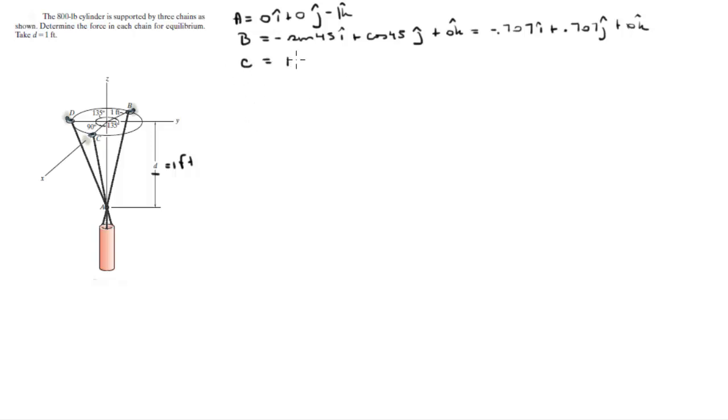C sits at 1 in the i plus 0 in the j plus 0 in the k, and D sits at 0 in the i minus 1 in the j plus 0 in the k.